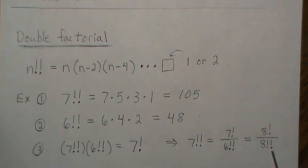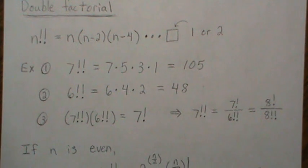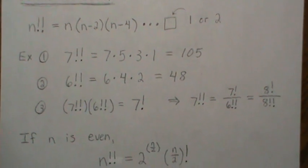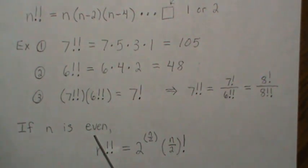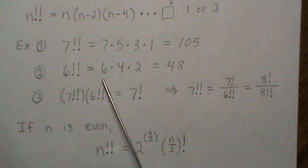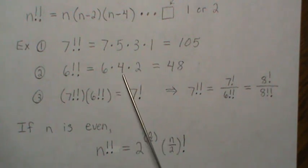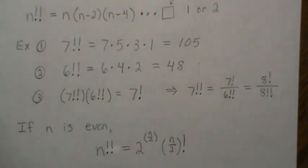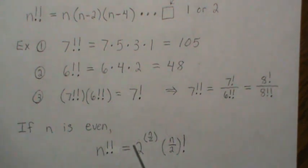To simplify the double factorial or rewrite it in terms of factorial, we'll use property three. When n is even, if we factor out a two from each term, we get one times two times three and so on. This relationship is an easy one: n double factorial equals two raised to n over two, times n over two factorial.